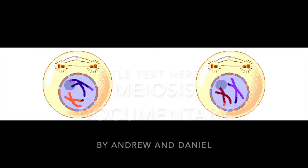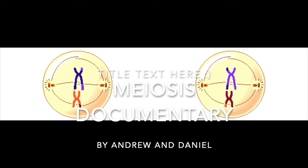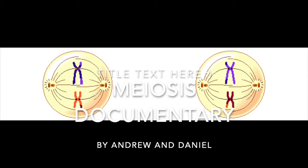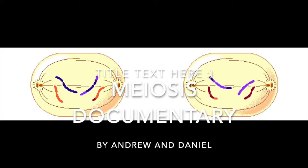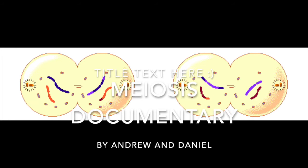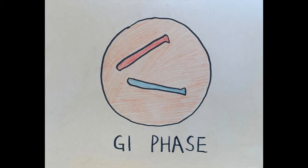This is our meiosis documentary. G1 Phase: In the G1 phase, cells become very active and start synthesizing a lot of proteins, including the enzymes and structural enzymes that are necessary for further growth.